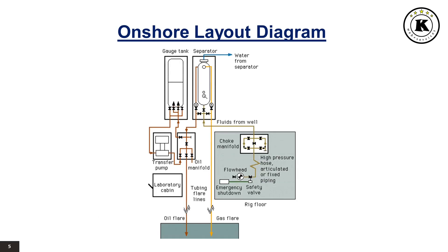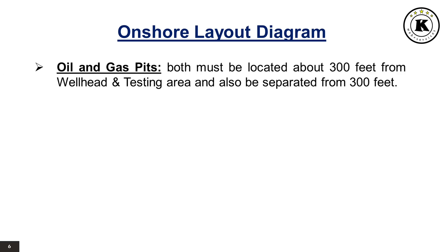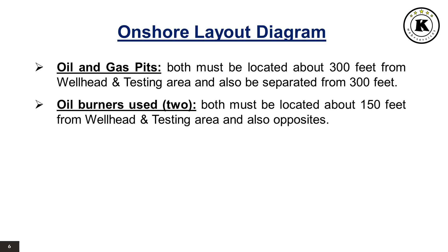In an onshore layout diagram, the oil and gas pits both must be located about 300 feet from the wellhead and testing area, and also be separated from each other by 300 feet. The oil burners used are two; both must be located about 150 feet from the wellhead and testing area, and positioned opposite each other.